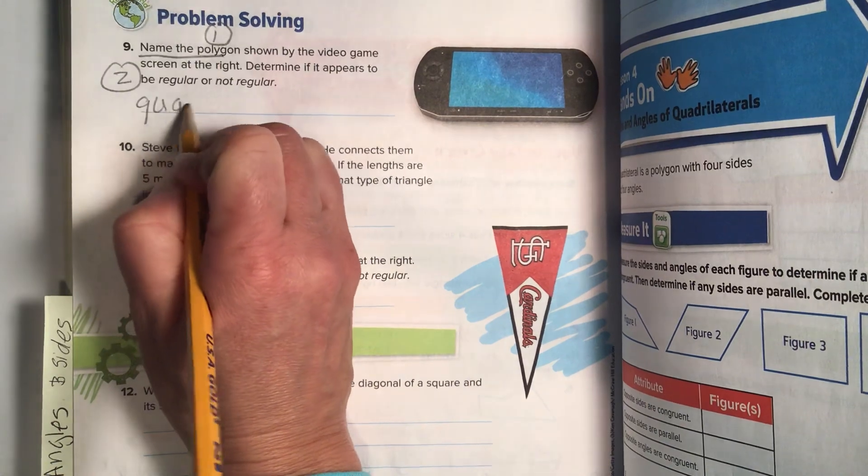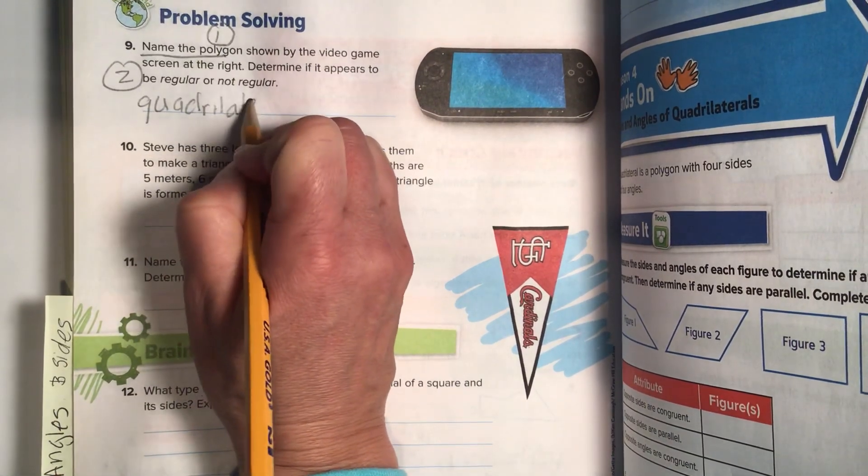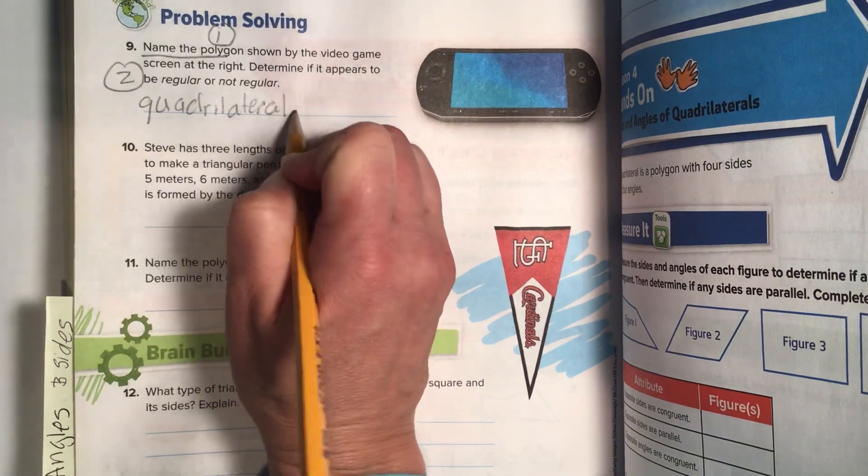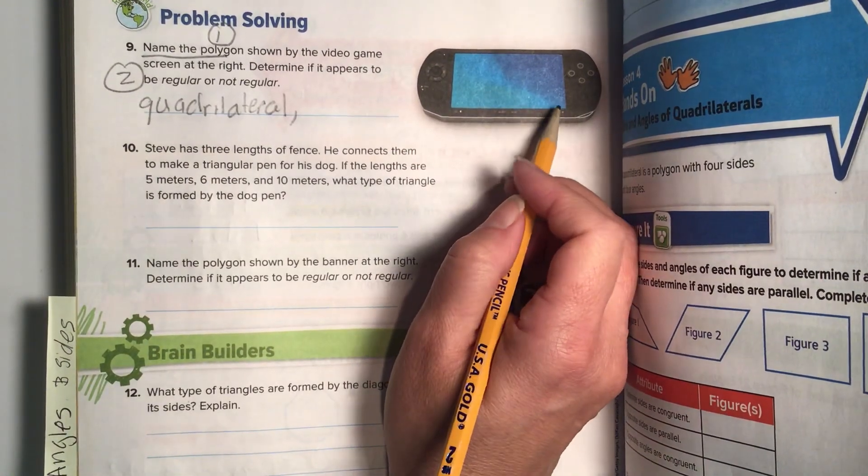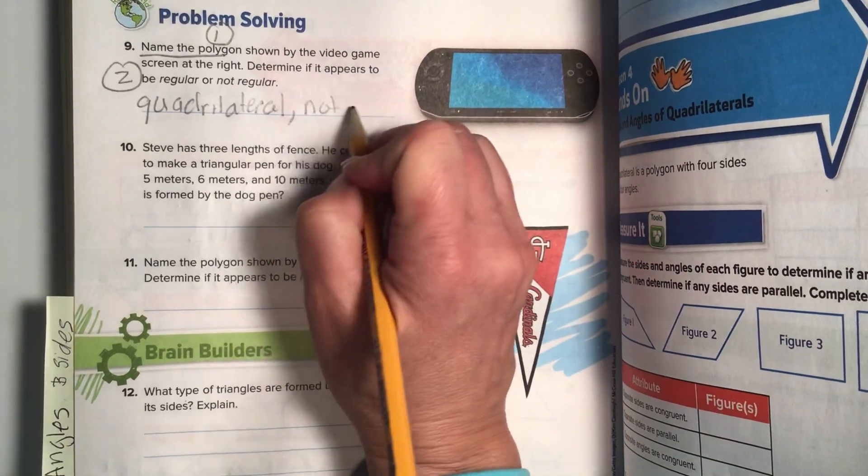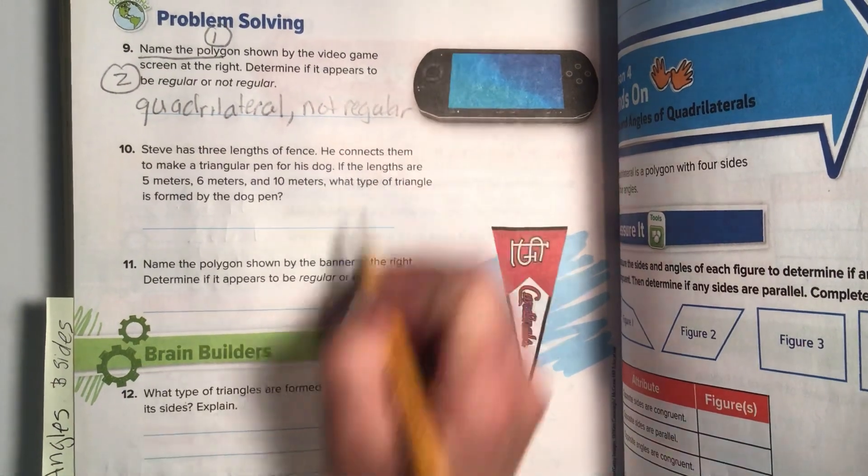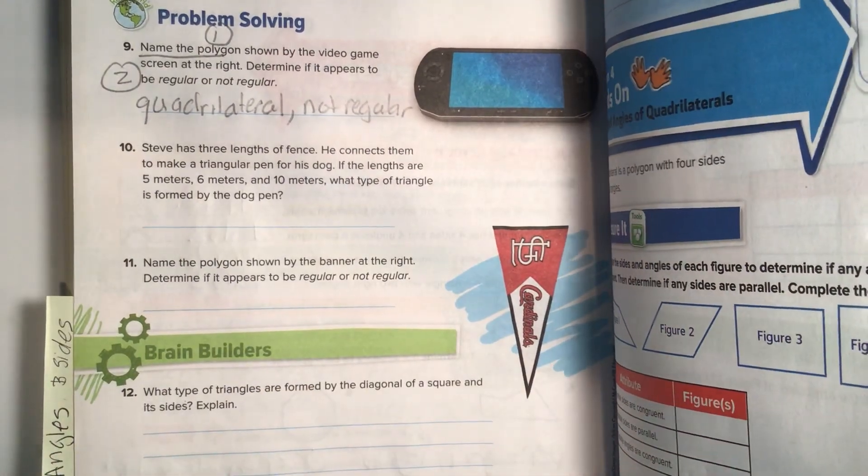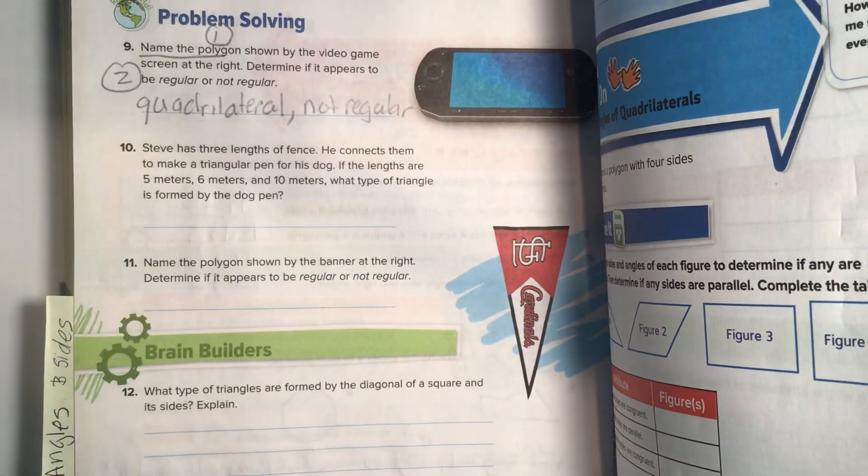Q-U-A-D. And all of the sides are not the same side. So, we're going to say it's not regular. Even though it looks really nice, it's not a regular quadrilateral. For it to be a regular, it would have to look like that one.